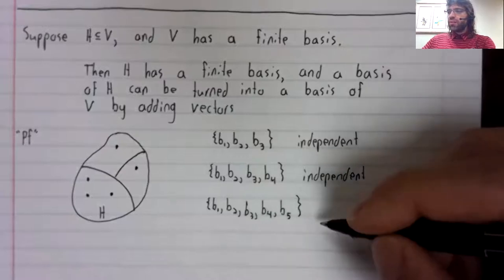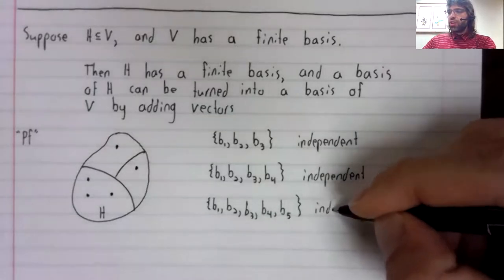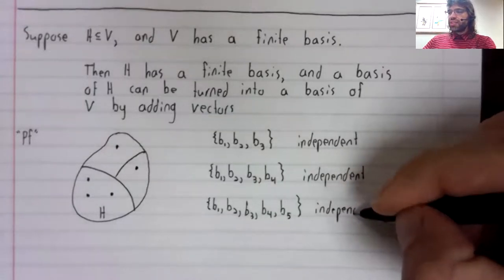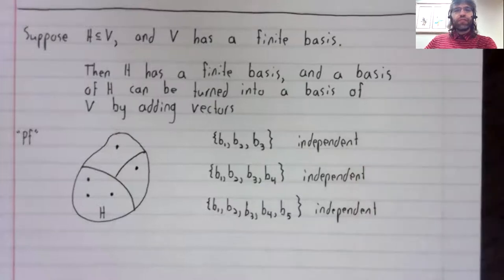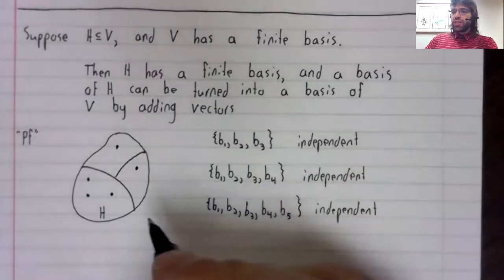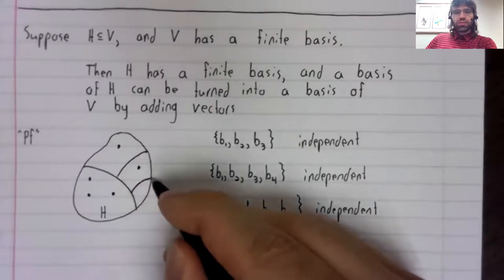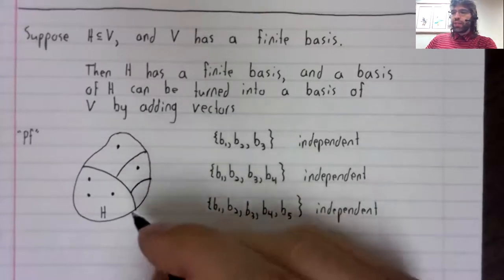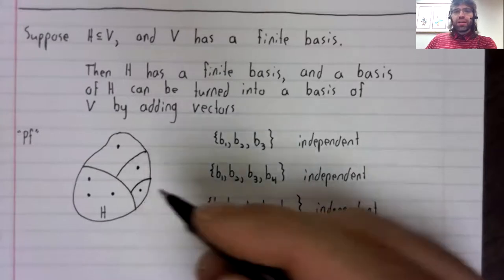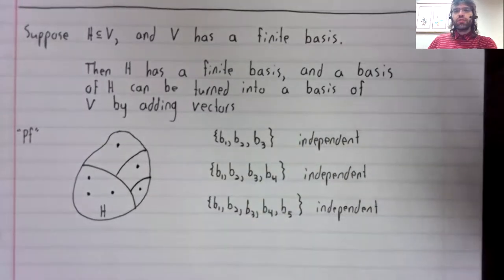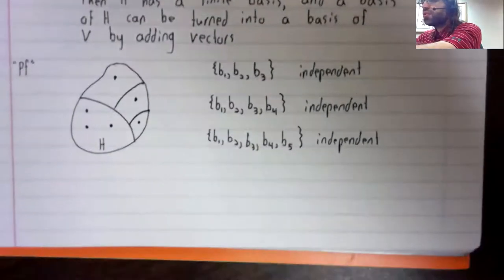Either this is a basis or it isn't. If it isn't, it's because there is some part of V that we're not spanning. Pick a vector in that part. Repeat this process.